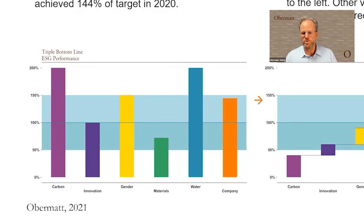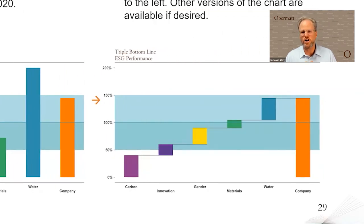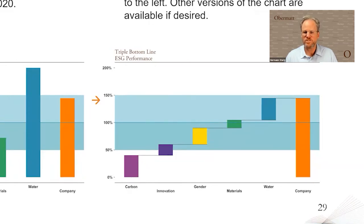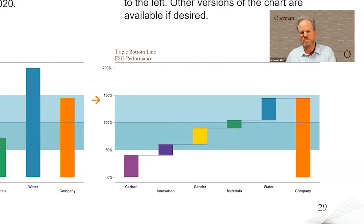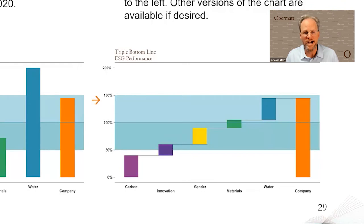We recommend turning this into a waterfall chart because the waterfall chart can accommodate different weightings. This company has chosen to weight everything the same, so the orange bar result is the same — it's just a more intuitive representation. This is especially useful when weightings are applied, because you can see them on the right side. For example, if carbon had double the weight and was an outperformance, the orange bar would be higher too.